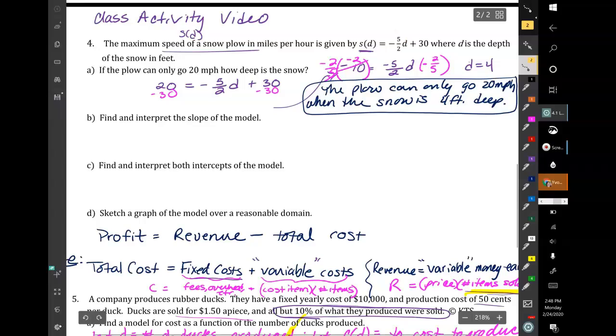Part B is find and interpret the slope of the model. So the slope is, or average rate of change, or rate of change because it's linear, is negative 5 halves. So what that means, I'm just going to write slope equals negative 5 halves. So we have that down. With word problems, we might put it into more meaningful language. Like we could write that as negative 2 and a half, or we could write that as negative 2.5. So the negative tells me that there's a decrease, or in this case, it's a rate. So I may just say it's slowing down.